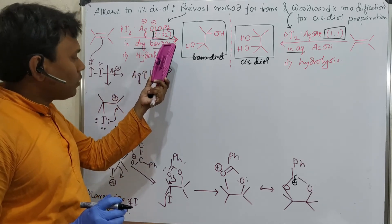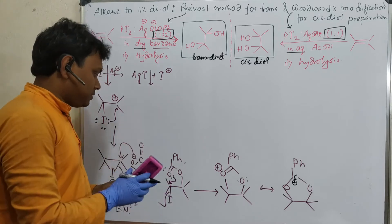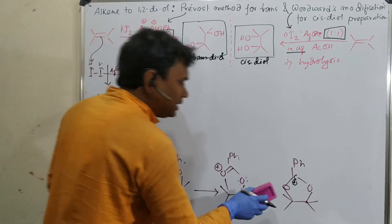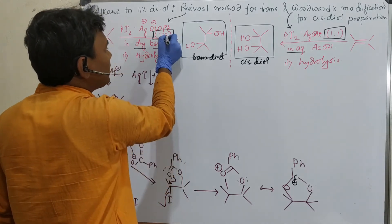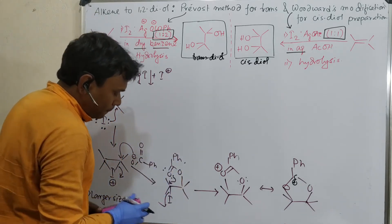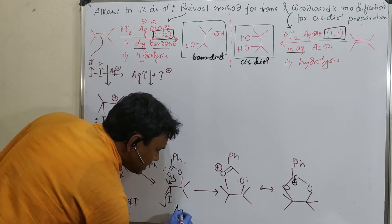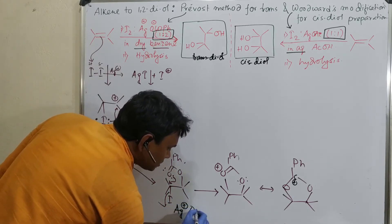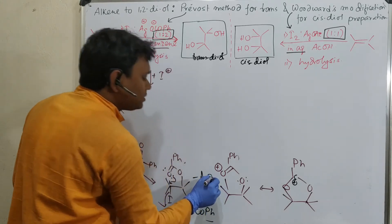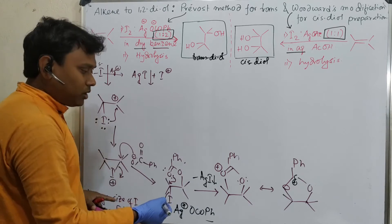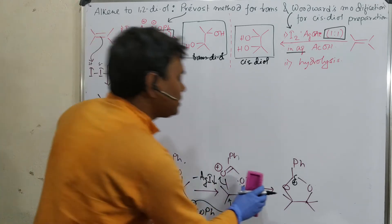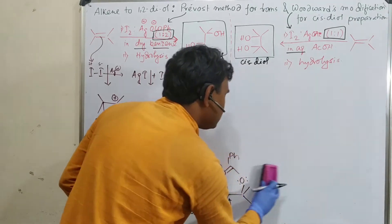In the 1:2 ratio (Prevost method), there is a second equivalent of silver benzoate. So after the 5-membered cyclic intermediate forms, the iodine leaves because there is additional excess silver benzoate present — silver iodide precipitates. Then in the reaction medium, another molecule of benzoate attacks and opens up the ring.